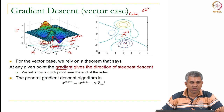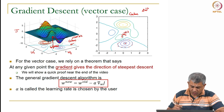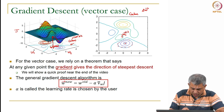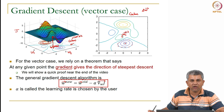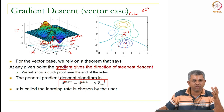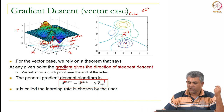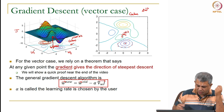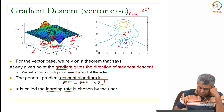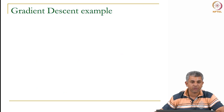You take the steepest descent direction, multiply by a parameter alpha to adjust the step size, and move from there. Alpha is a very important parameter called the learning rate, and it is something that we have to choose.